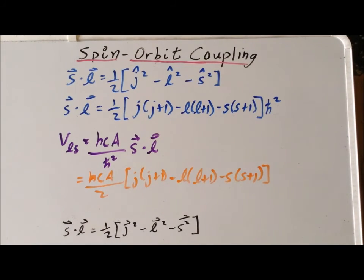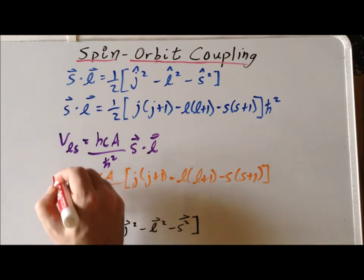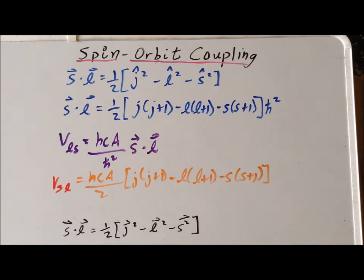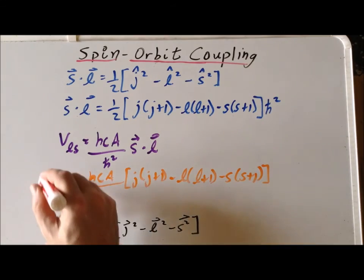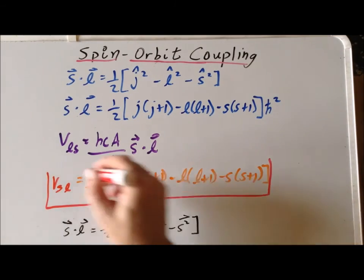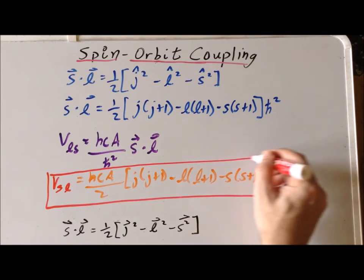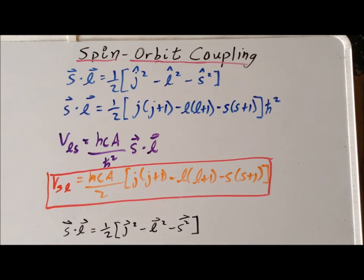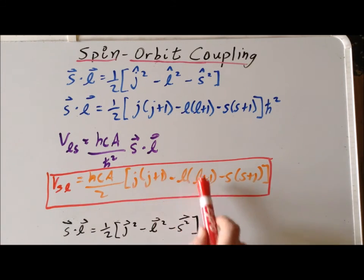And that gives our final result for the energy differences related to different J values. This energy of interaction will depend upon the spin-orbit coupling constant A, which depends upon the individual element, but it will also depend upon J, L, and S.